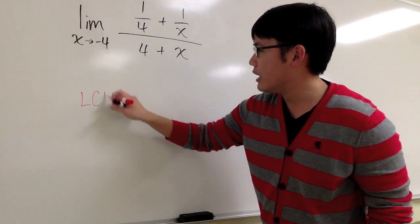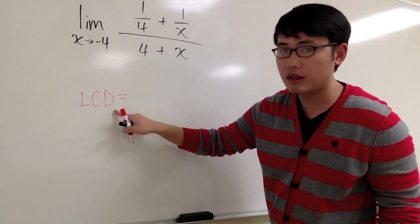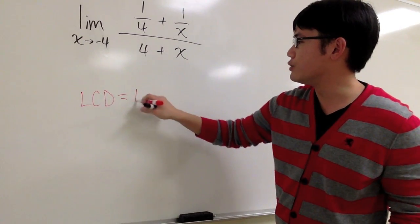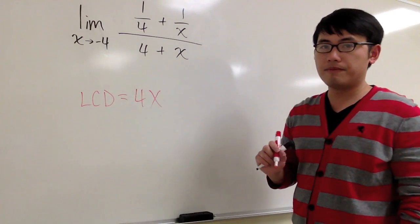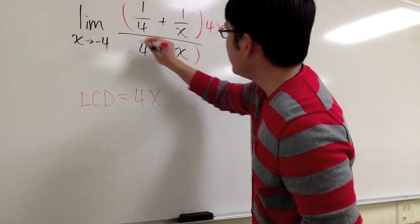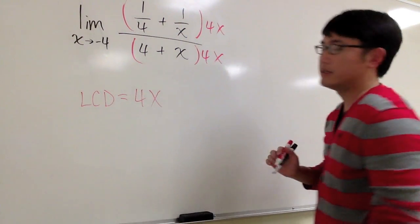In this case, the lowest common denominator of the small fractions will be 4 and x, which is going to be 4x. And I'm just going to multiply the top by 4x and the bottom by 4x as well.